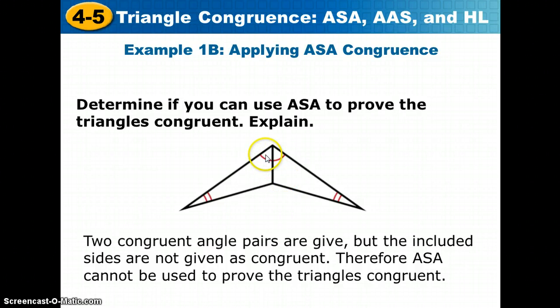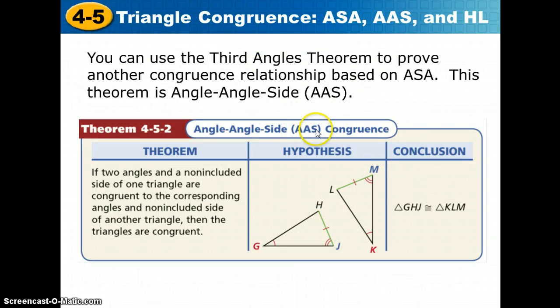So we could say these are congruent, but not directly by angle-side-angle. We would use angle-angle-side. If two angles of one triangle and a non-included side are congruent to two angles of another triangle and the non-included side, then the triangles can also be congruent by angle-angle-side. Because of the third angles theorem, we can change it to angle-angle-side and it would still work.